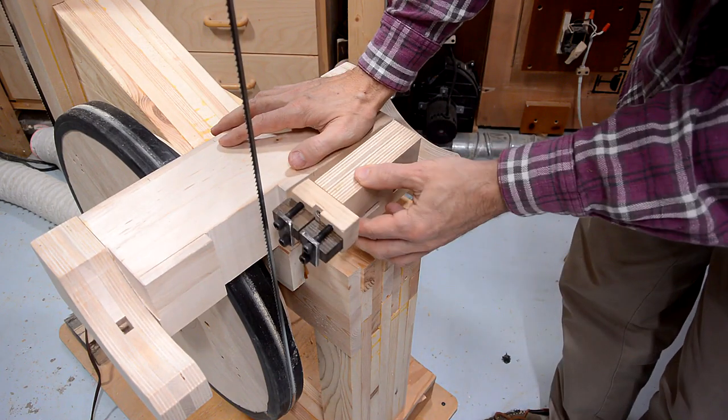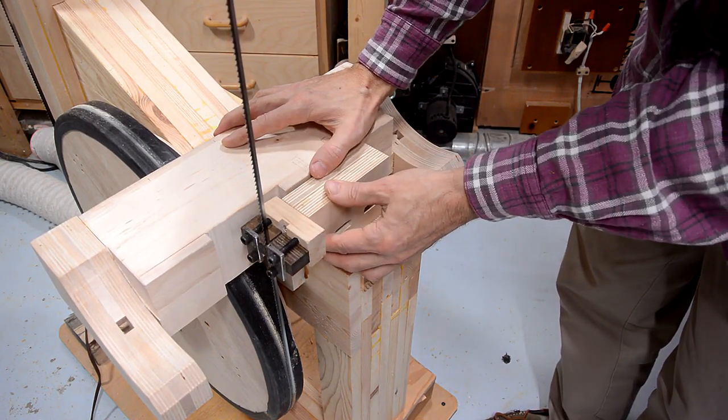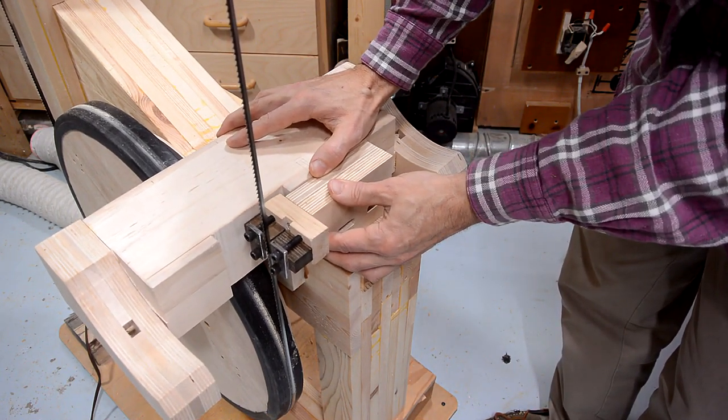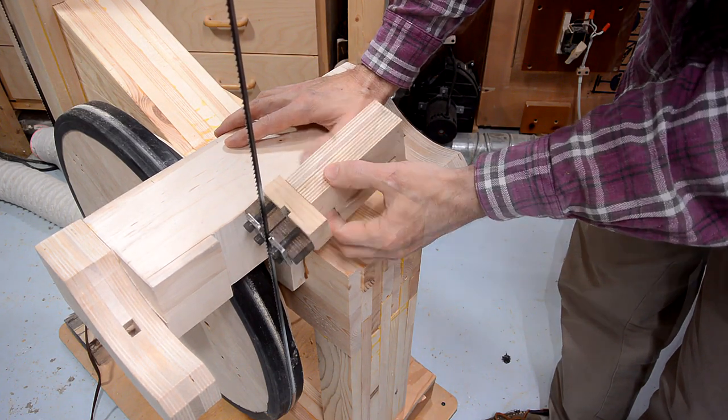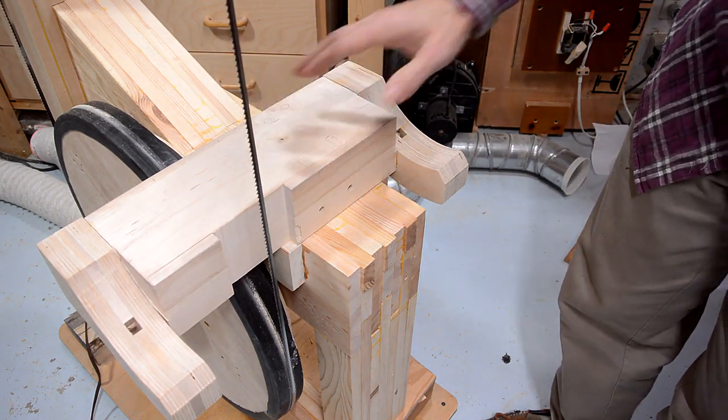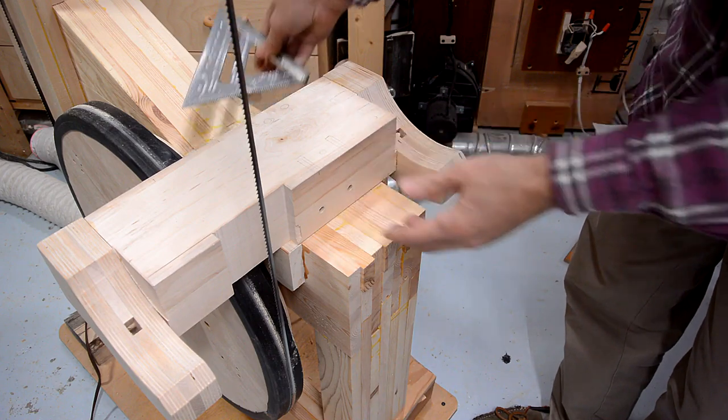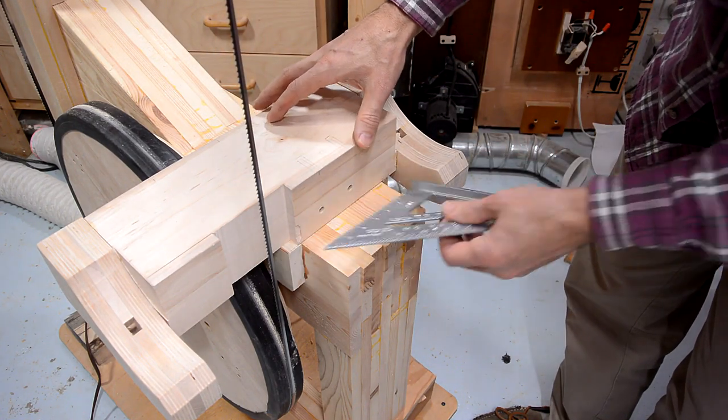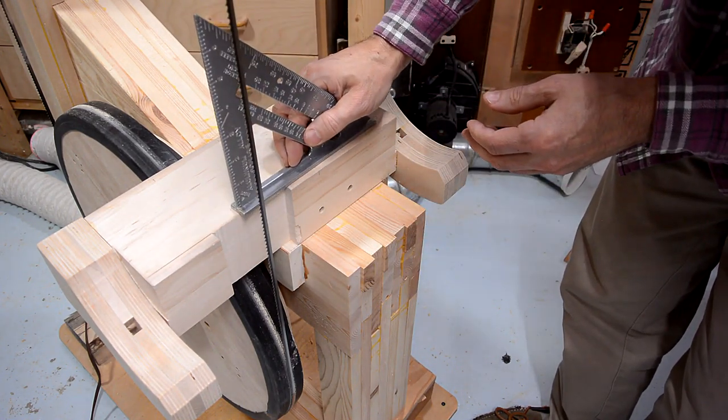And then, to fix the side to side position, I can use the blade guides, and make sure it's centered on there when it's up against here. And of course, I have to make sure that it's square to the frame, like this. And check that it's perpendicular to the blade, like this.